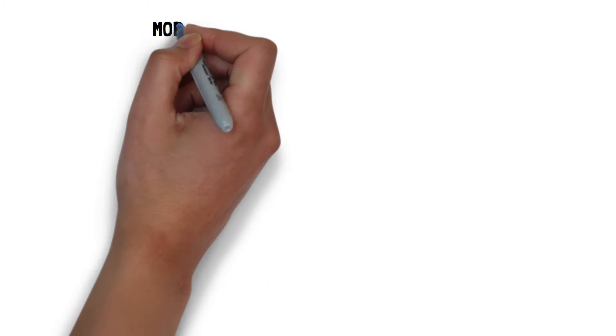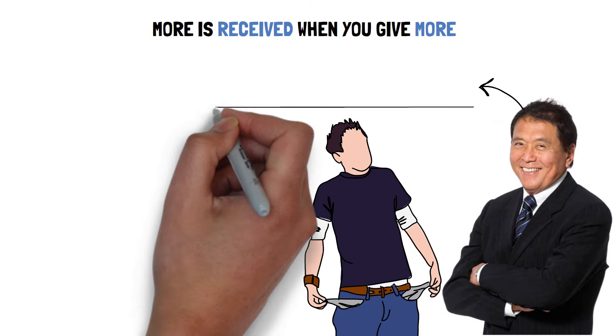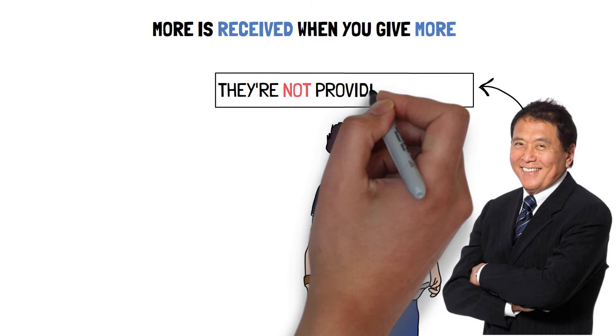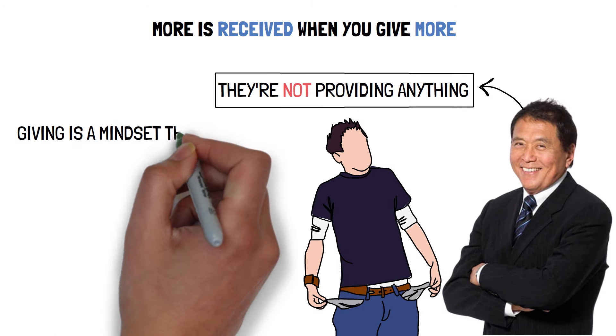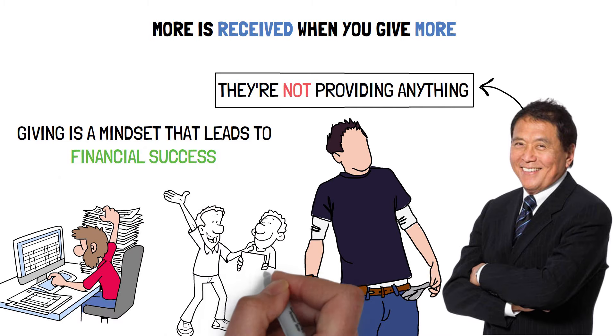More is received when you give more. When Kiyosaki encounters someone who doesn't have any money, he assumes they're not providing anything. Giving is a mindset that leads to financial success, whether it's putting in extra effort at work or sharing your rewards with others.